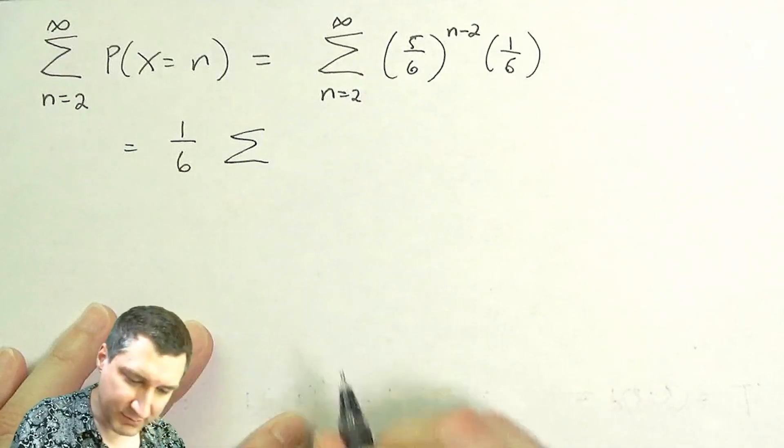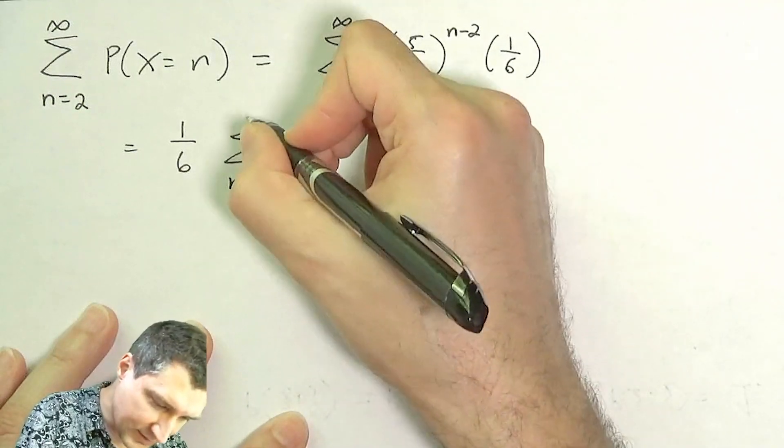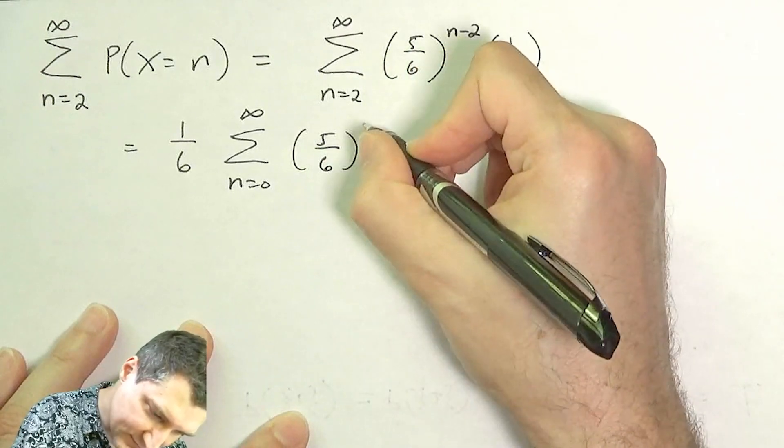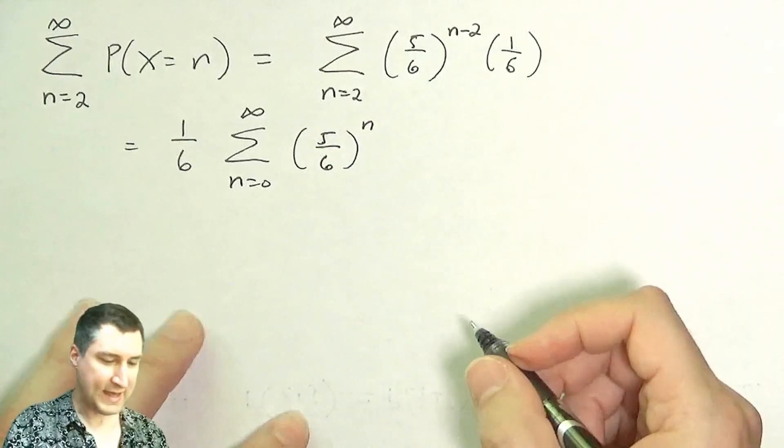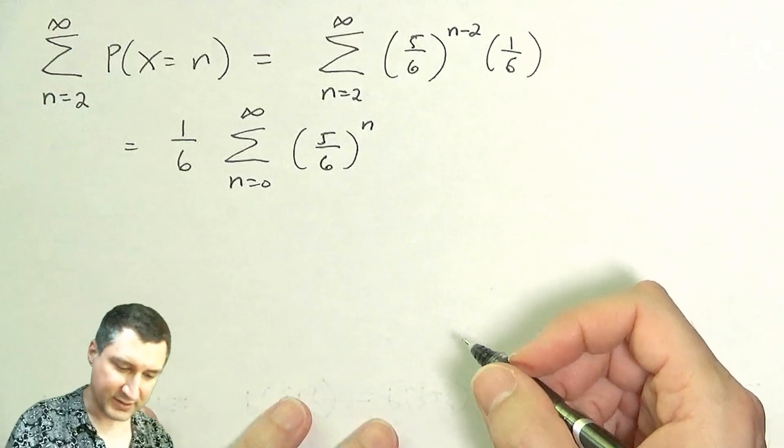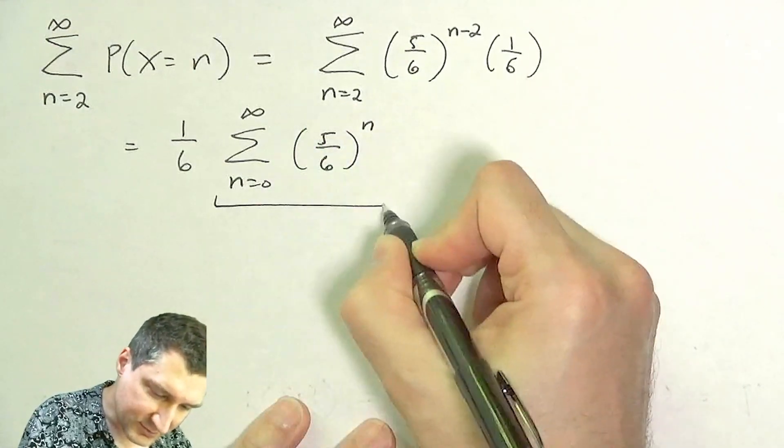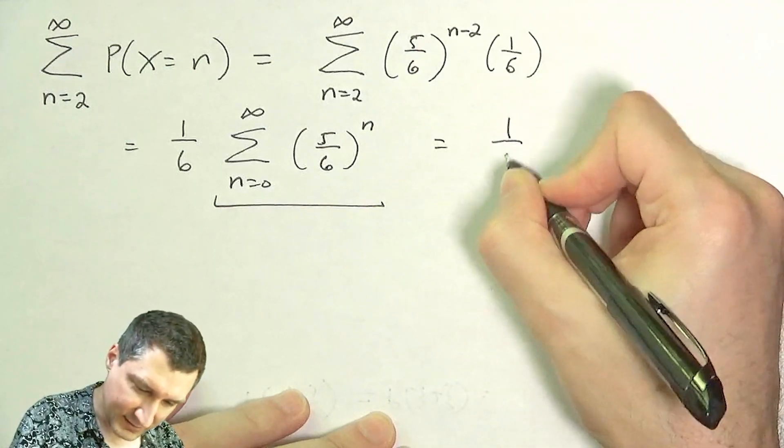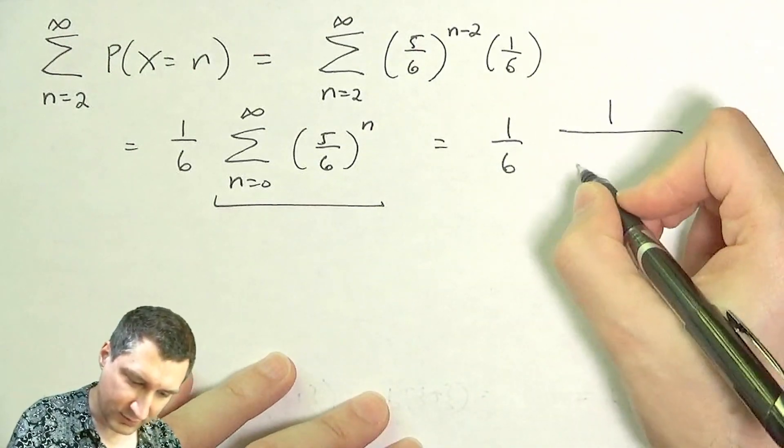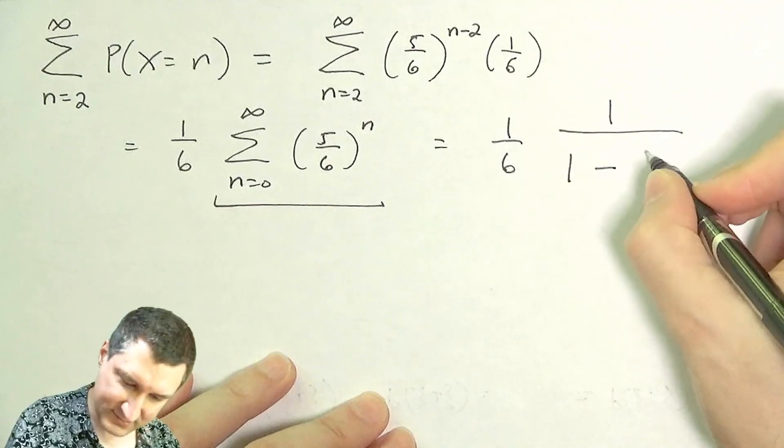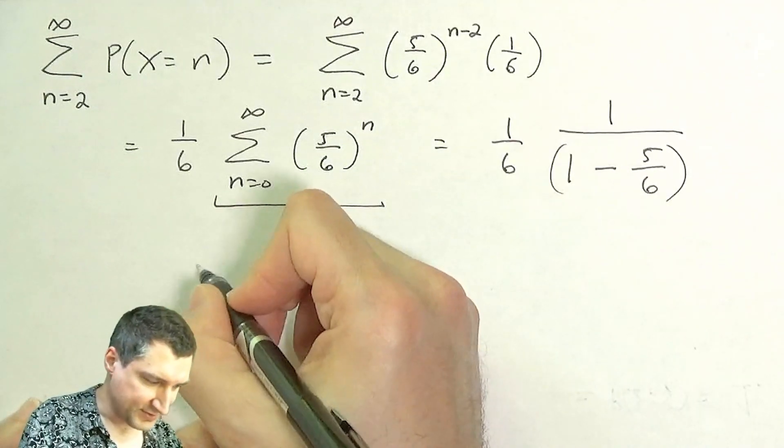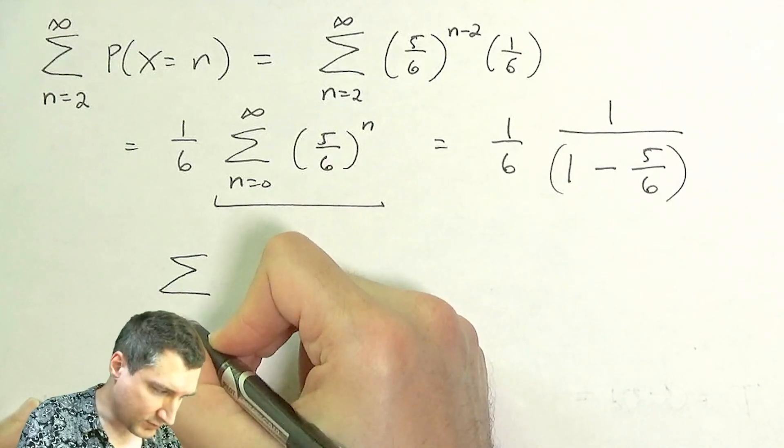And I can renumber my sum to start at zero instead of two. Now this is a summation formula that should be familiar to you from hopefully some other class. The answer here is 1 over (1 minus 5/6). What I'm using is this formula that says that when a is less than 1, this infinite sum is equal to 1/(1-a).